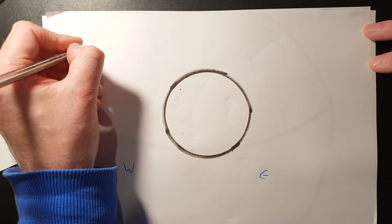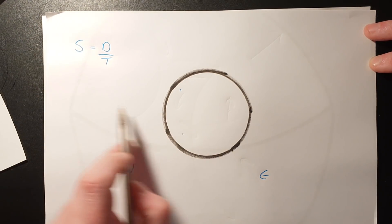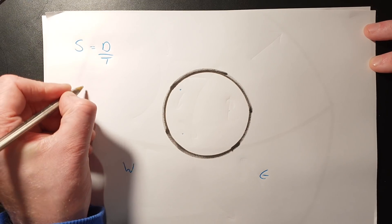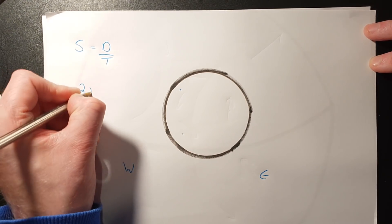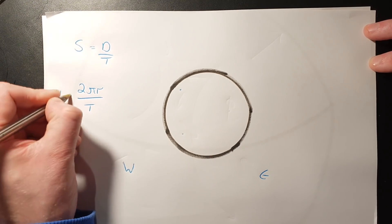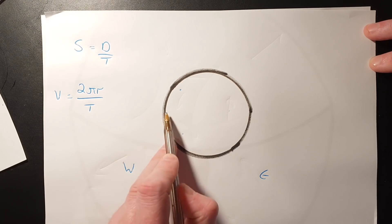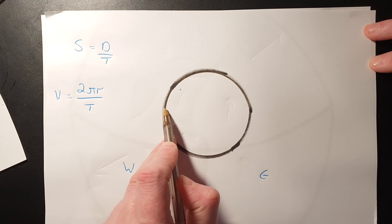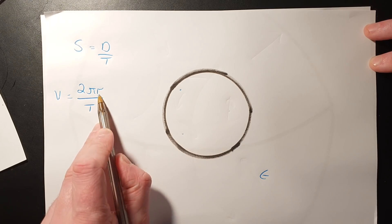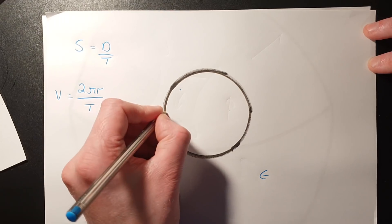Why is that? Well, speed is distance divided by time. What's the distance that this point has to travel? It's the circumference of the circle, which is 2πr or πd. So our linear speed is 2πr over t. What that tells us is, as the radius of the Earth gets smaller — as I move north or south from the equator — the linear speed will change.